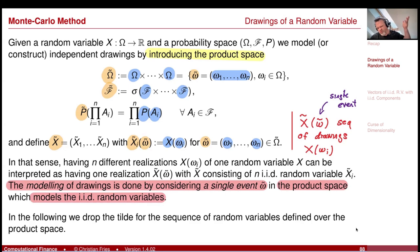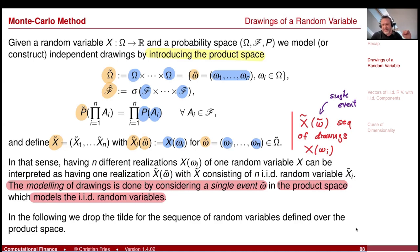The reason this matters is that convergence results consider a sequence of IID random variables and state that their average converges to something. What we do in the computer is look at a single event of this sequence of IID random variables. So if we have a result that holds only in probability, it does not tell us anything for a single event.